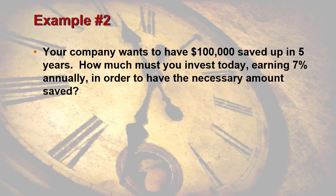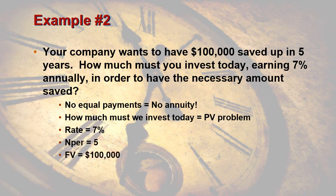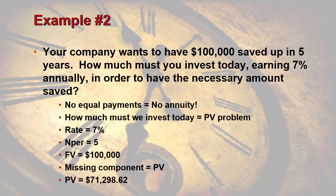Example two: your company wants to have $100,000 saved up in five years. How much must you invest today earning 7% annually in order to have the necessary amount saved? We have no equal payments, so it's not an annuity problem. Since we just want to know how much we need to invest today, it ends up being a present value problem. We fill in our components: rate is 7%, number of periods is 5, future value is $100,000. Our missing component is present value, and we need to invest $71,298.62. You don't gain a ton of value by just leaving it in an account — an annuity structure helps build balances much quicker.